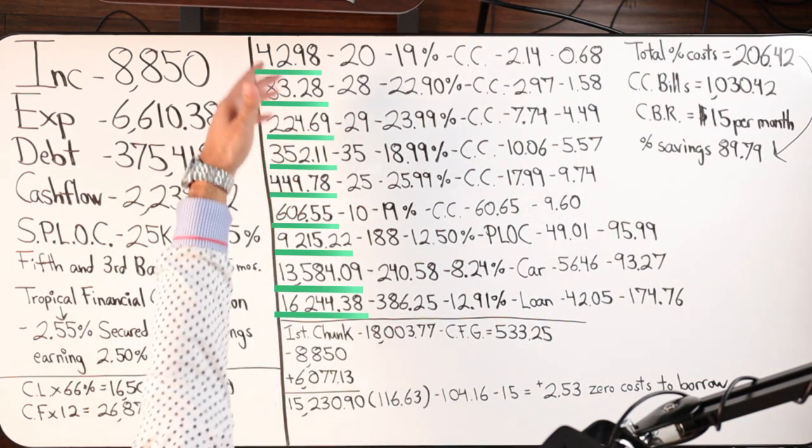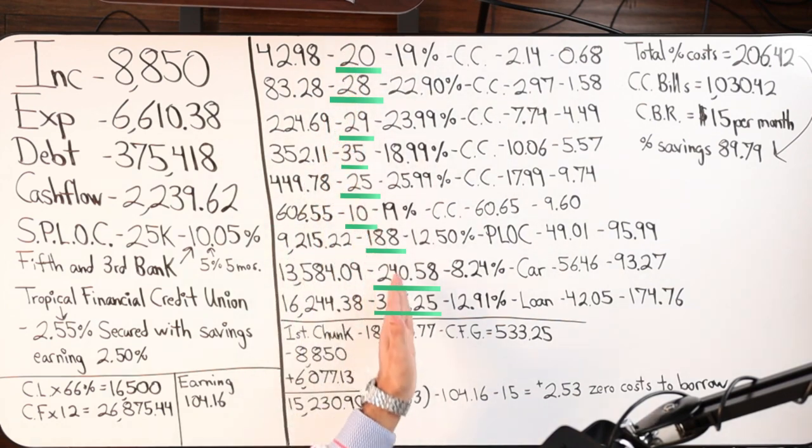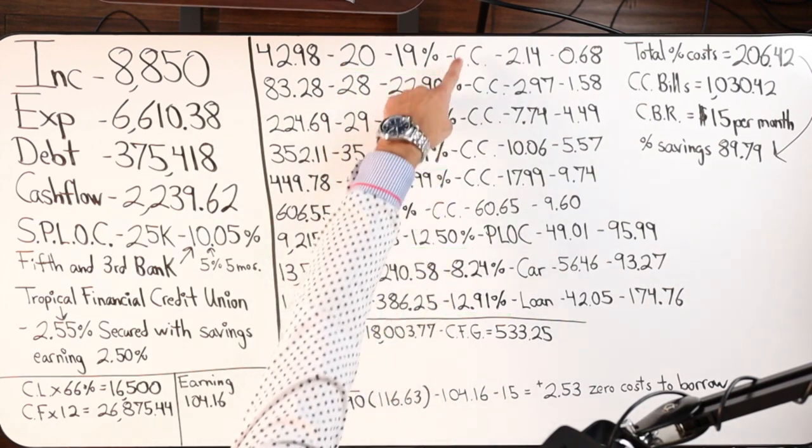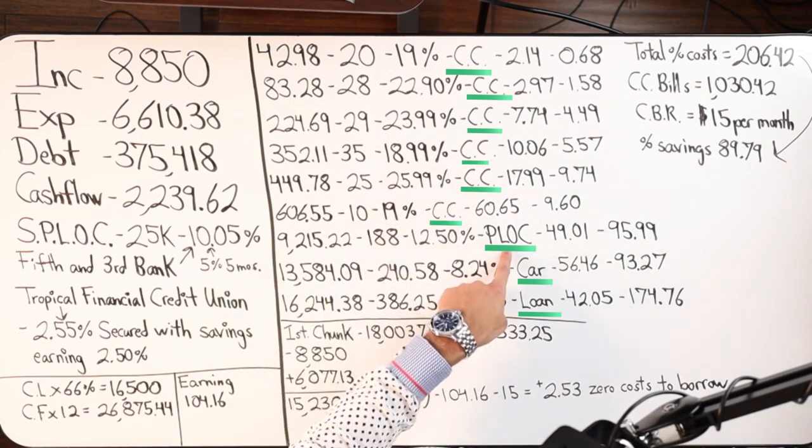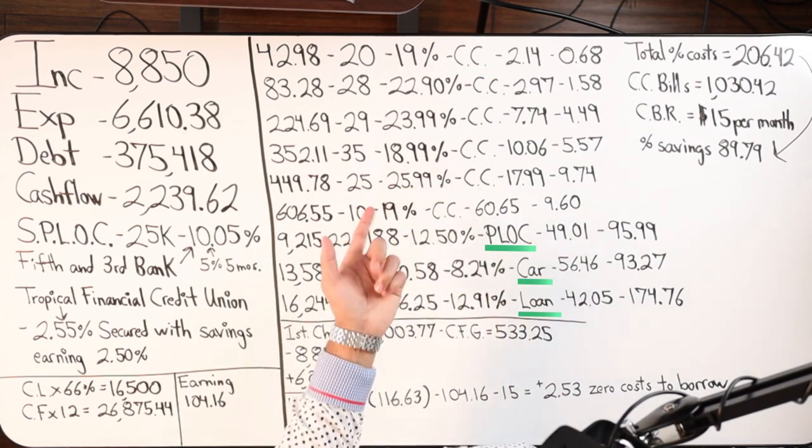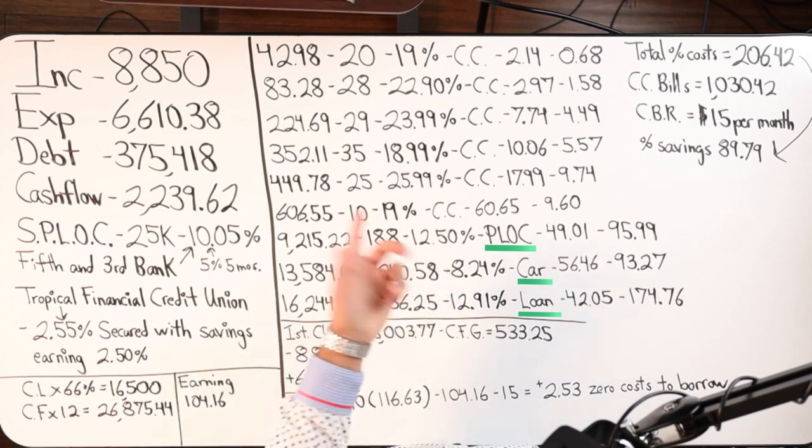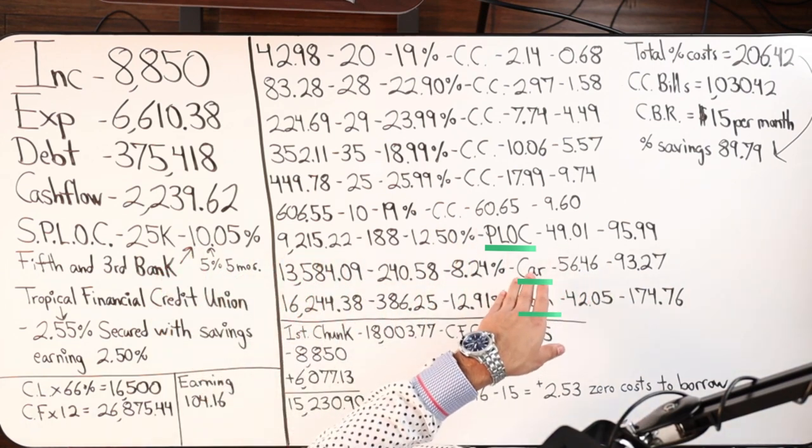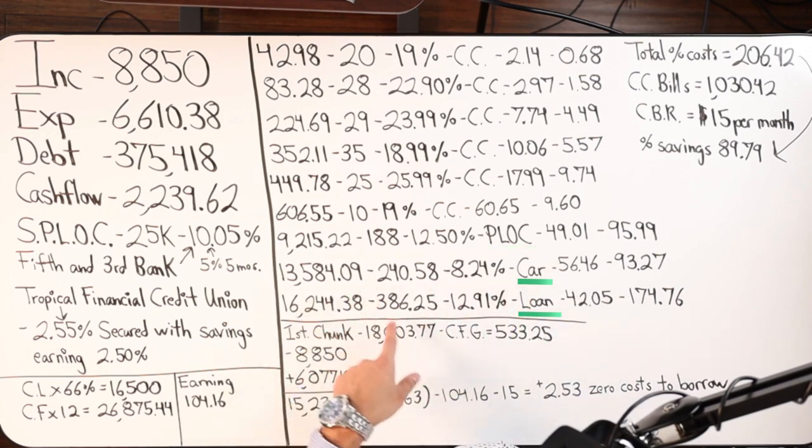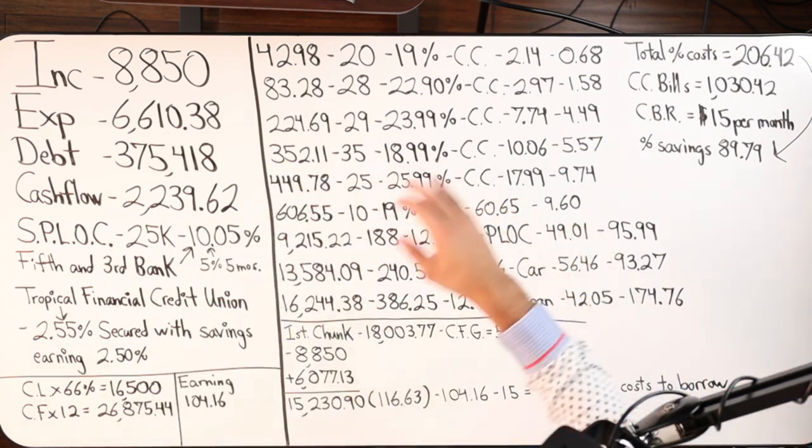So here are the debts. I put them in smallest to greatest. This is the debts that we owe. Here are the monthly payments. Here are the interest rates. And then what the debt is. So from here, from the first debt all the way to 606 are all credit cards. We have a PLOC. So prior to getting the secured personal line of credit, they had an unsecured personal line of credit at 12.5%. So at least they went to a lower rate. That's the cool part. So they owe $9,000 on their previous personal line of credit. Then we have a car loan, and we have a student loan. The other debt is the mortgage. I left it off the board. We're not focused on the mortgage right now. We're focused on eliminating these consumer debts.